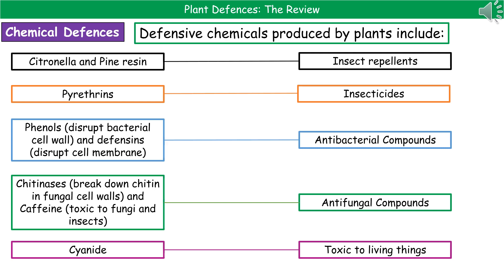Phenols disrupt the bacterial cell wall and defensins disrupt the cell membrane, so both act as antibacterial compounds. Antifungal compounds include chitinases, which break down chitin that makes up fungal cell walls, and caffeine, which is toxic to fungi and insects. Finally, cyanide is generally toxic to pretty much any living thing it comes into contact with.